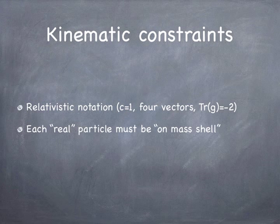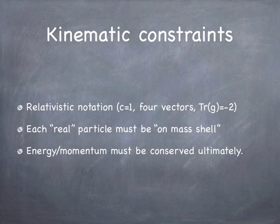Everything that goes into and comes out of a reaction has to be a real particle, which means it has to be on the mass shell. That means its energy squared is equal to its rest energy squared plus its momentum squared — E² = M² + P² in units where C equals 1. All real particles have to have that property. What we're going to find out is that the internal particles involved in various reactions don't need to lie on the mass shell.